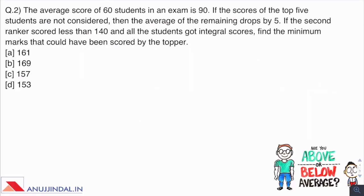Question 2. The average score of 60 students in an exam is 90. Just by reading this, you must be calculating the sum of their marks. If the scores of top 5 students are not considered, then the average of the remaining drops by 5. If the second ranker scored less than 140 and all students got integral scores, find the minimum marks that could have been scored by the topper. The first piece of information is the sum of scores of 60 people equals 5400.